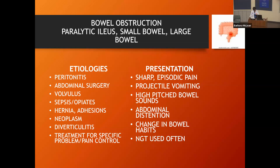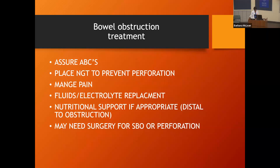High-pitched bowel sounds and changes in bowel habits — less frequent bowel movements — are also signs. We often place NG tubes to relieve the ileus and reduce the pressure in the abdomen. For treatment, make sure the patient is well-oxygenated and stable first — airway, breathing, vital signs — then place the NG tube and manage pain. If they can't take nutrition by mouth, use PPN or TPN. They may need surgery, such as a small bowel repair.